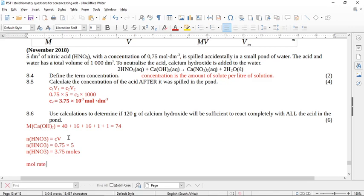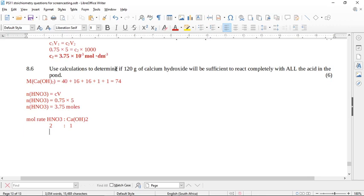So now the mole ratio of nitric acid to calcium hydroxide. What is the mole ratio here from the balanced equation? It's 2 nitric acid to 1 calcium hydroxide. So that means this is 3.75, so this is going to be 3.75 divided by 2, which is 1.875 moles.